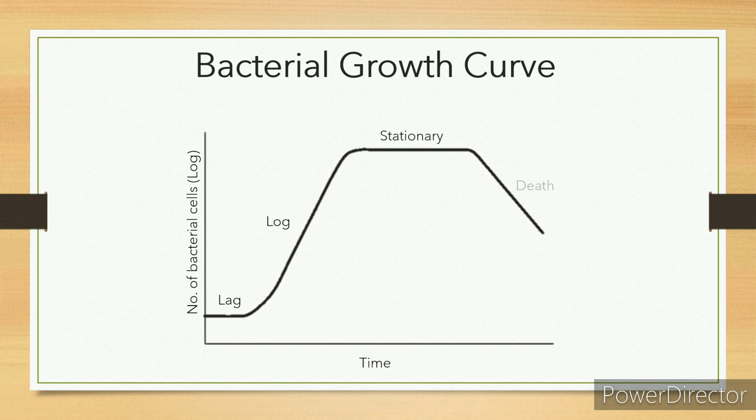Bacterial growth curve. It is characterized by four distinct phases, especially in broths. They are lag phase, log phase, stationary phase, and death phase.